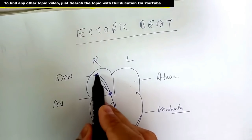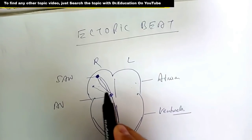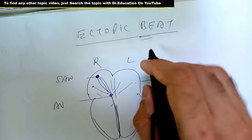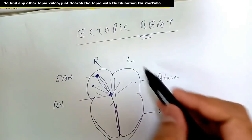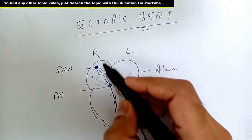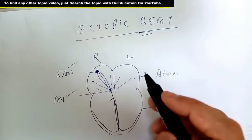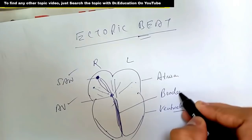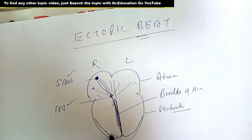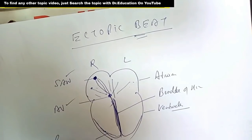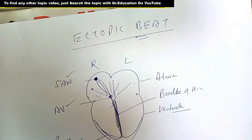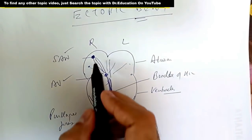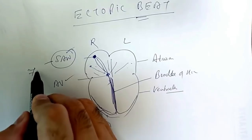If this SA node fails, the beat can come from other places in the heart. The beat can be generated from the AV node. The Bundle of His can also generate beats. The Purkinje fibers can also generate beats. But the SA node is the main pacemaker because the speed of beat generation is fastest here.